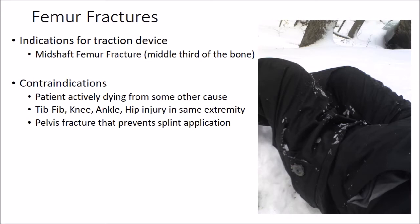Traction is only indicated when the fracture is in the mid-shaft area, or the middle third of the bone. Distal fractures get treated more like a knee, and proximal fractures get treated like a hip. It is contraindicated to apply traction if the patient is actively dying from some other cause and there are other ABC priorities that take precedence.